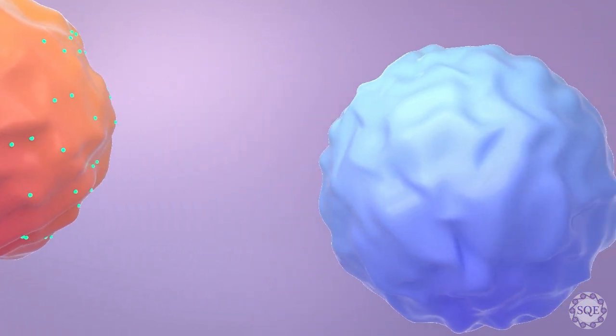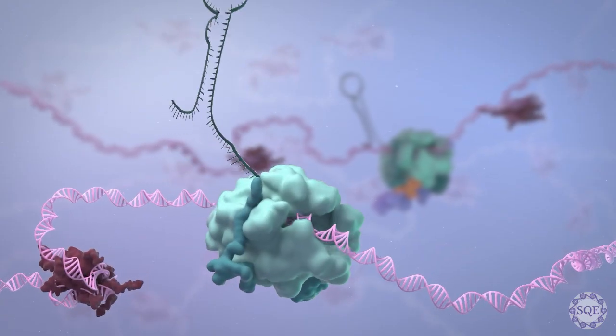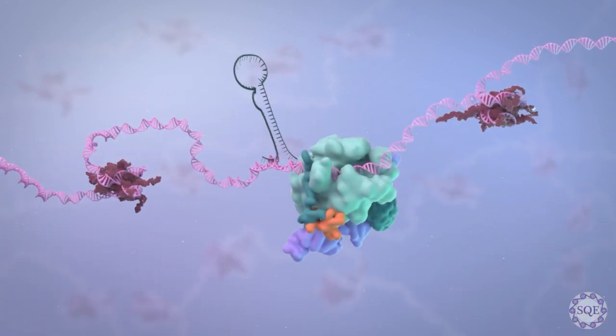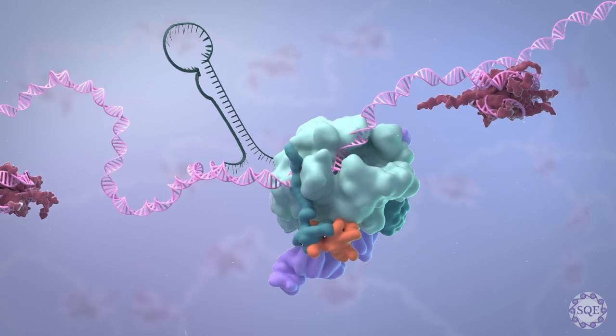Gene transcription mediated by RNA polymerase II is a multi-step process. Before productive elongation, RNA polymerase II is paused at proximal promoter regions.